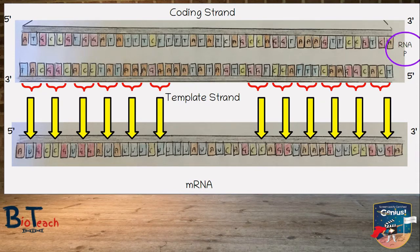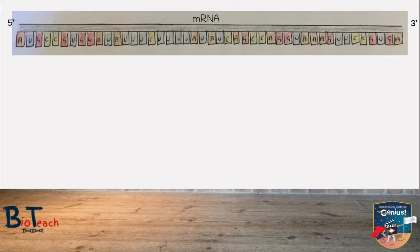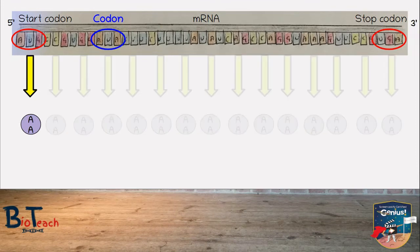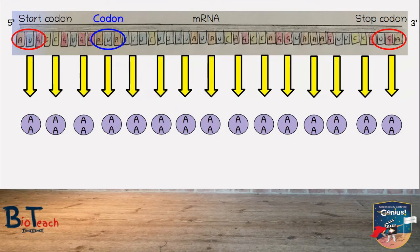RNA polymerase stops making mRNA when it reaches the stop signal on the DNA molecule. Once the mRNA has been made, the DNA strands previously split apart will coil back and the hydrogen bonds will reform. The mRNA strand reads from the 5' to 3' direction, with the start codon AUG at one end and the stop codon UGA at the other. Each triplet of bases is a codon, and each codon codes for an amino acid, just as you saw with the amino acid table or codon wheel.